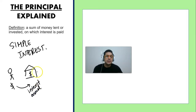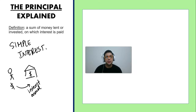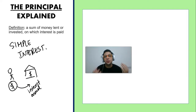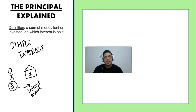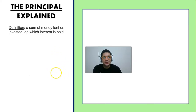The bank pays you back a percentage of the amount of money you put in the bank. The money you put in the bank is what we're going to be calling the principal. So the principal is the sum of money that you are depositing, and the bank is going to pay you a percent of that money every single year.